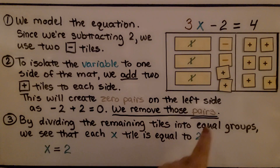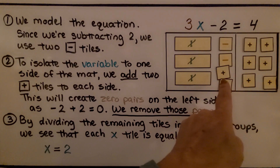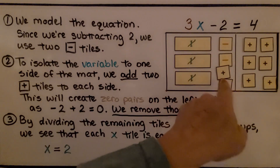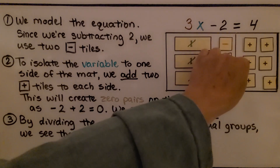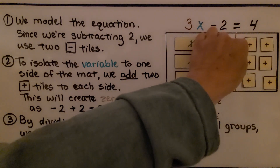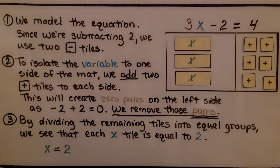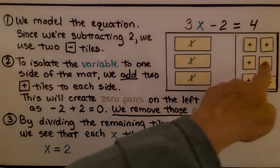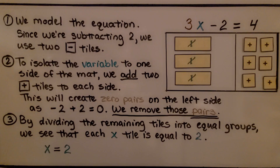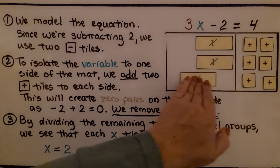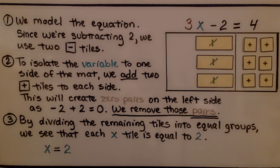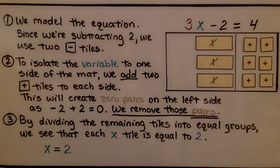This creates zero pairs on the left side, since minus 2 plus 2 is equal to 0. If we take those pairs away, we're left with 3x is equal to 6. By dividing the remaining tiles into equal groups, we see that each x tile is equal to 2. So x is equal to 2.